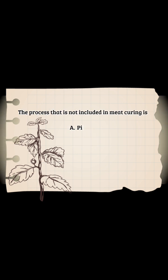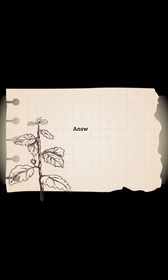The process that is not included in meat curing is: A - pickling, B - sorting, C - smoking, D - freezing. Answer: D - freezing.